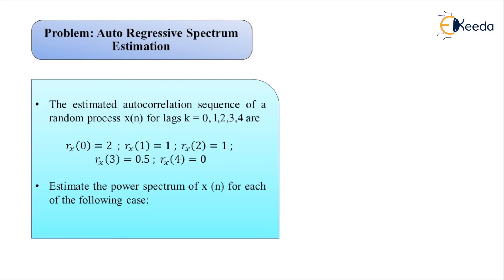The given case is that x(n) is an AR(2) process. The autocorrelation sequence values for lags k = 0 through 4 are: rx(0) = 2, rx(1) = 1, rx(2) = 1, rx(3) = 0.5, and rx(4) = 0. This completes the problem statement.